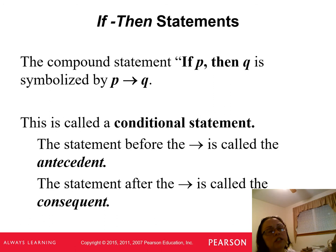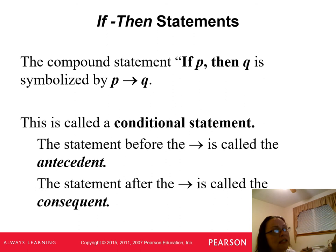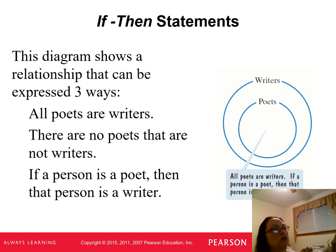In addition to 'and' and 'or,' we have 'if-then.' If-then is represented by an arrow. So 'if it's not raining, then I can go outside' is an example of an if-then statement. It's called a conditional. The statement before the arrow is called the antecedent, and the statement after the arrow is called the consequent.